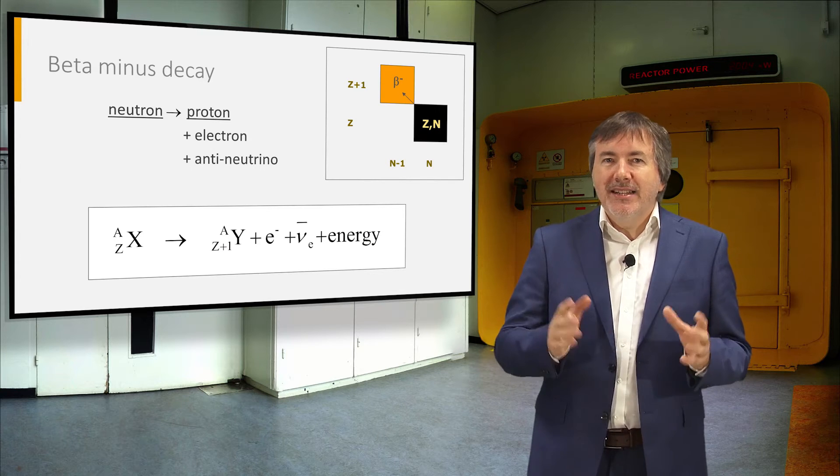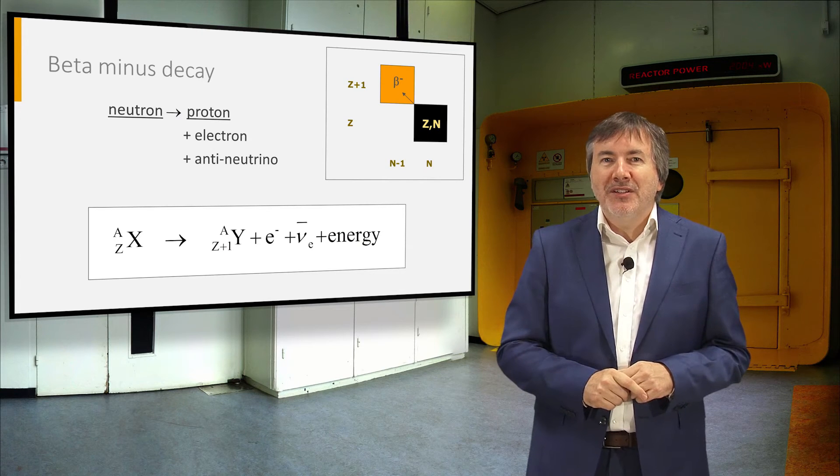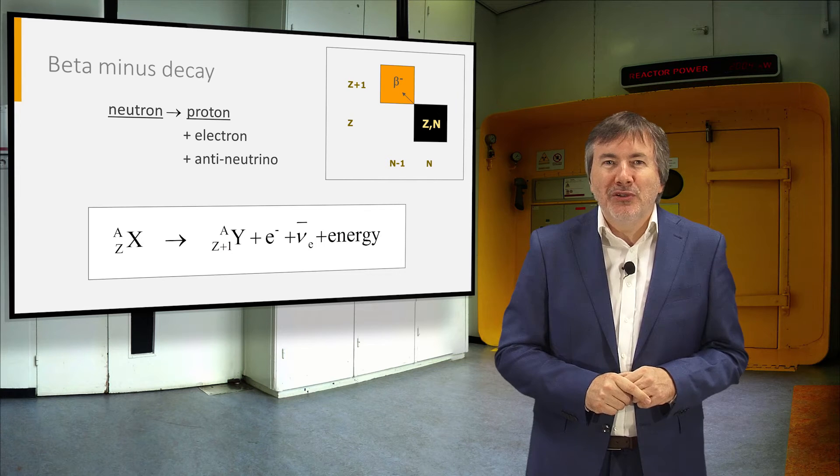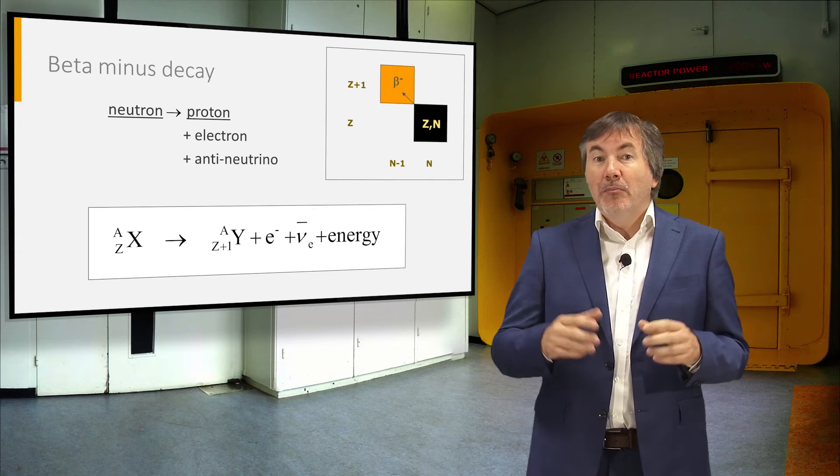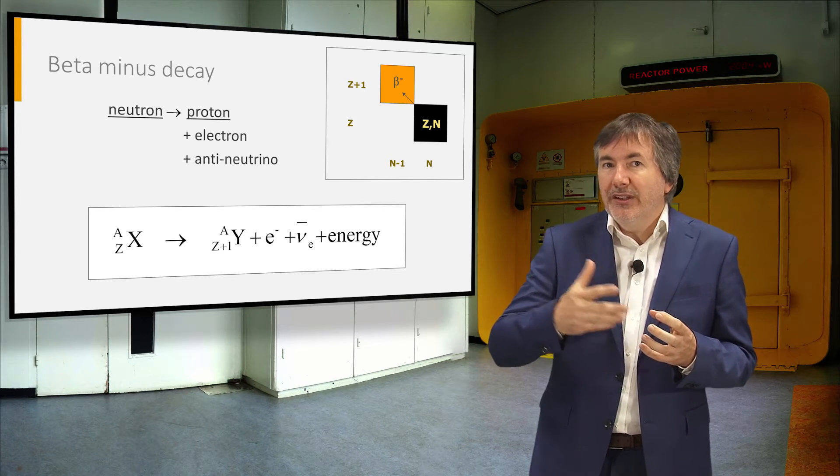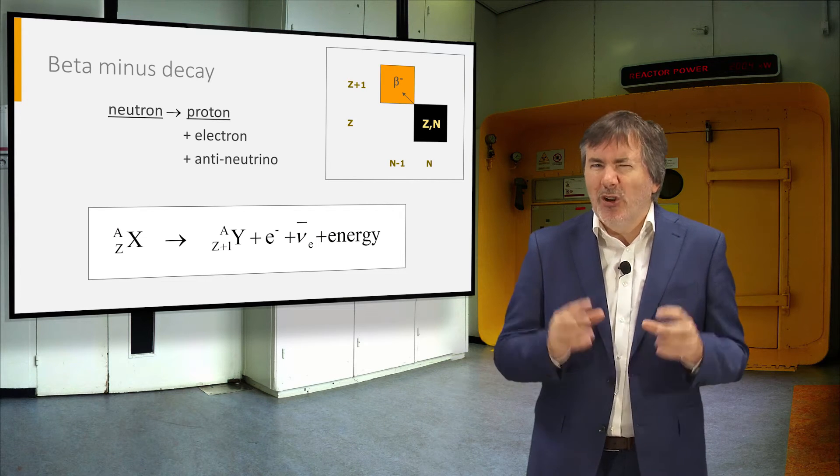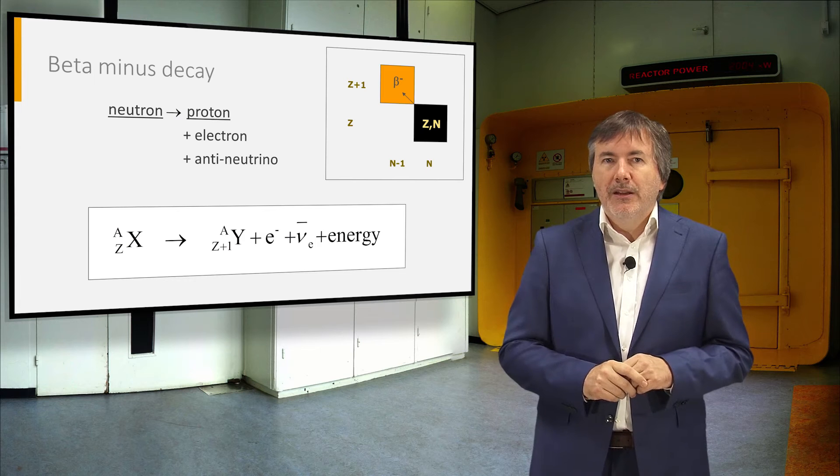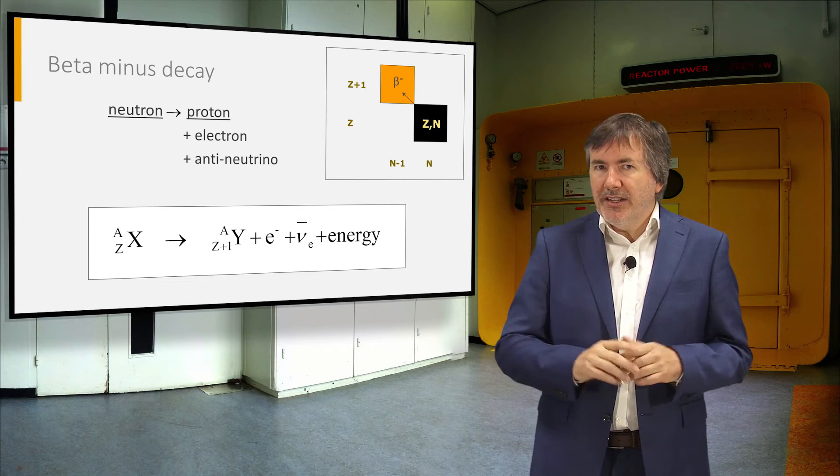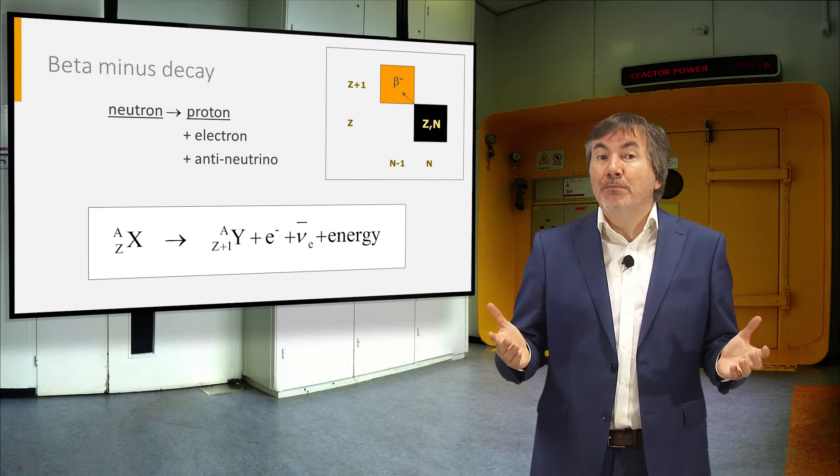Beta-minus decay is the only spontaneous process in which a nuclide can cure from neutron excess, by transforming a neutron into a proton, and emitting an electron and anti-neutrino from inside the nucleus. The mass number stays the same, so it is an isobaric process.